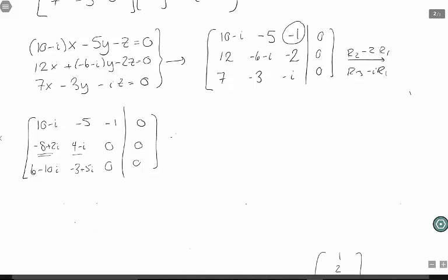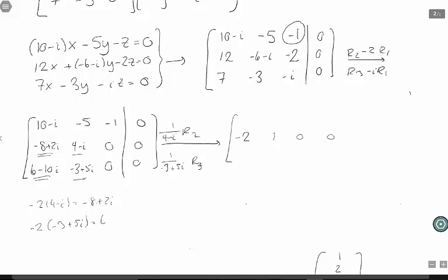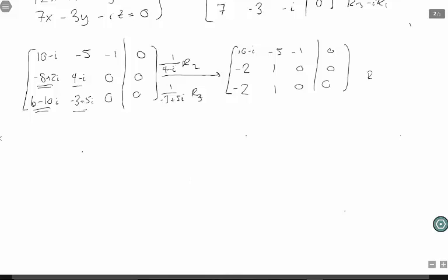These entries are just minus 2 times them. So I can take row 2 and divide by 4 minus i. Same thing with the third row. This entry in the bottom left is negative 2 times minus 3 plus 5i. So when I divide by minus 3 plus 5i, I'm left with a negative 2.